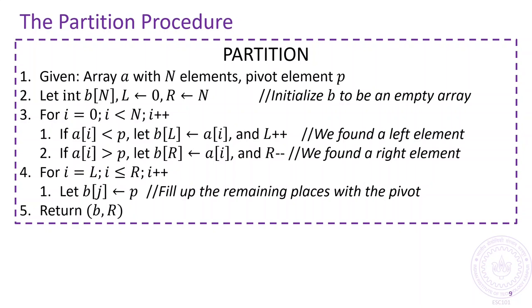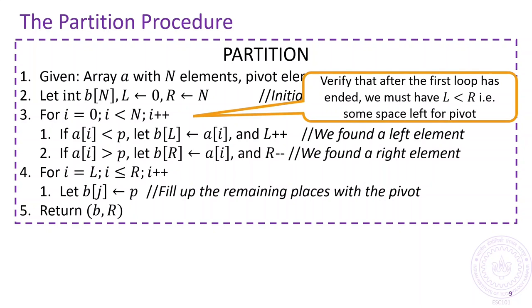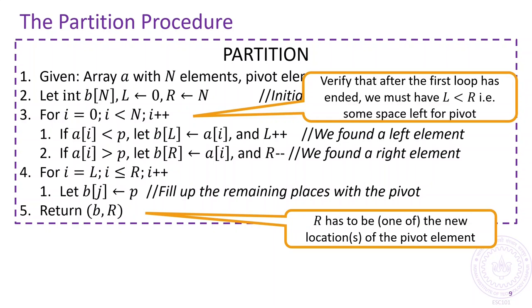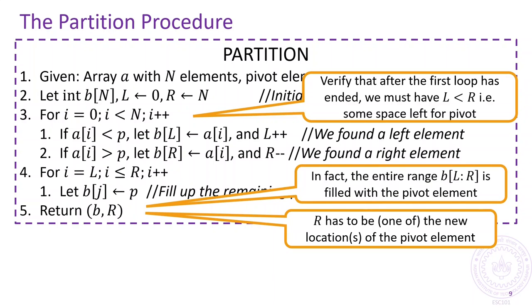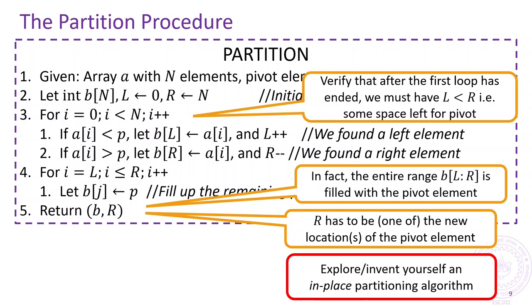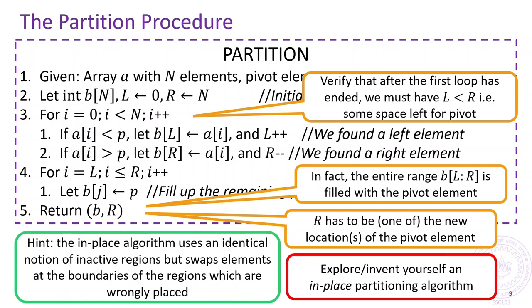Here is pseudo code for the partition algorithm. Notice that after the first for loop has ended, any empty locations are filled with the pivot value and one of the indices of the pivot element in the partitioned array is returned. Can you develop an in-place version of this algorithm that does not require creating a separate blank array? Here is a hint to help you along with this exercise.